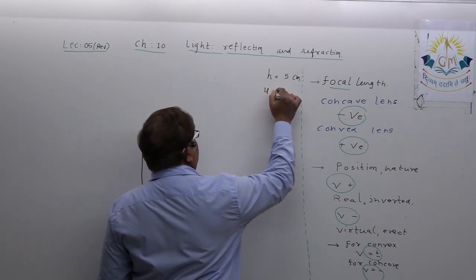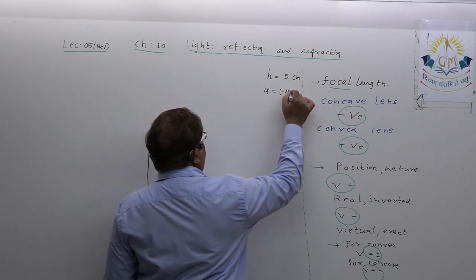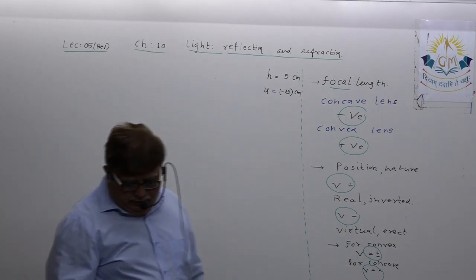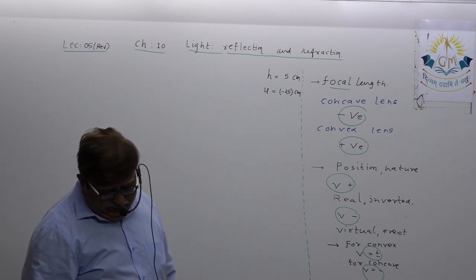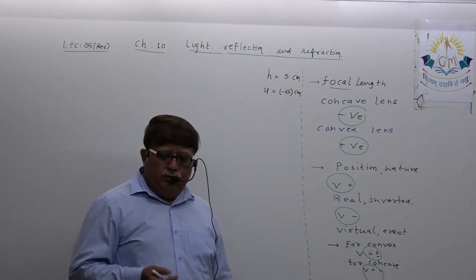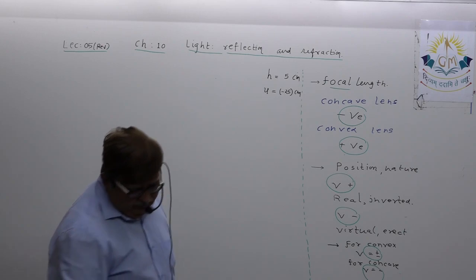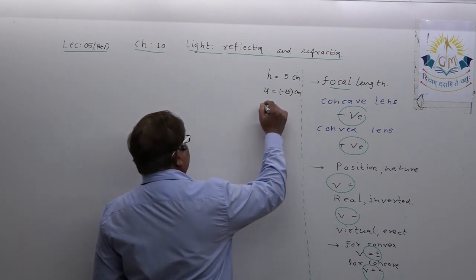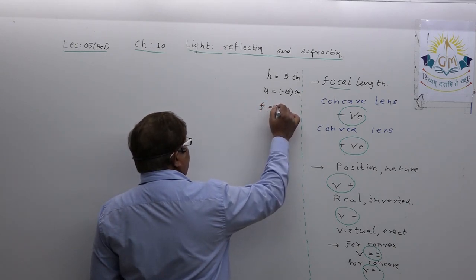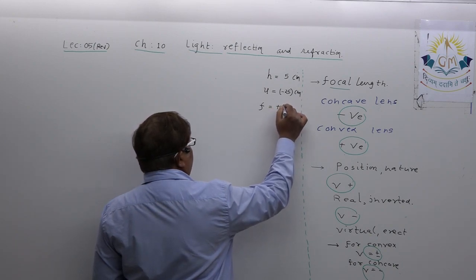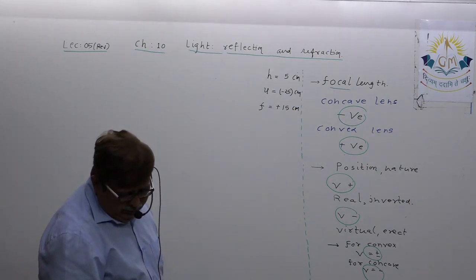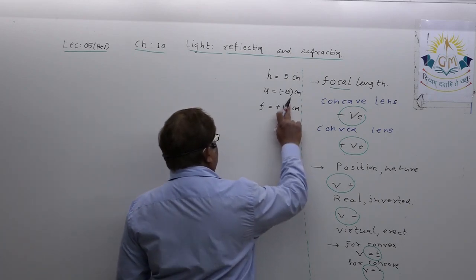So U has been mentioned, which always remains negative. U equals minus 25 cm. It is a converging lens, which means convex lens, of focal length 10 cm. Obviously, when you are dealing with the convex lens, focal length is always taken to be positive — it is 10 cm.